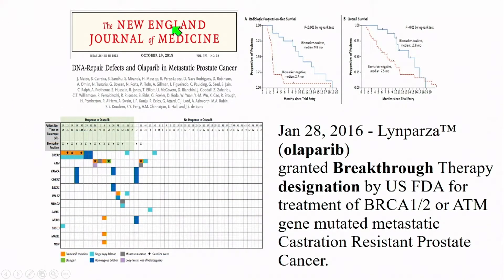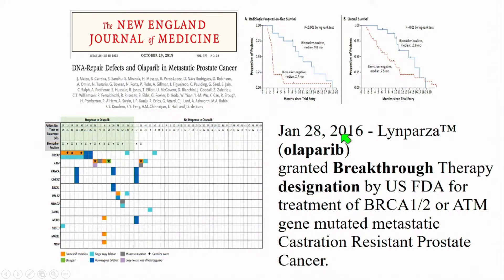Looking at the data, radiographic progression-free survival was substantially better in patients who had the repair pathway mutation versus those who did not, as was overall survival. Because of this study, olaparib was granted breakthrough therapy designation by the FDA in 2016. However, as of now it is still not approved for treatment and is probably not covered by third parties.